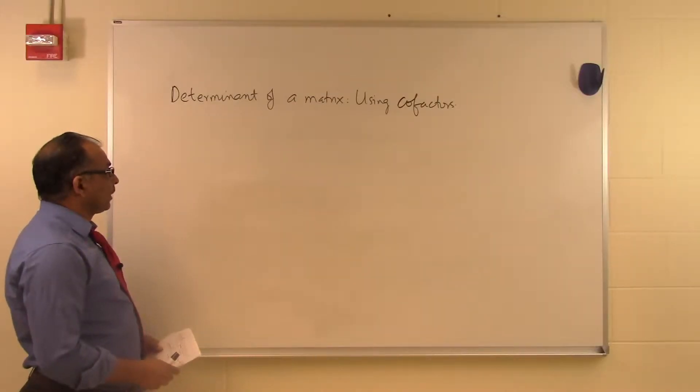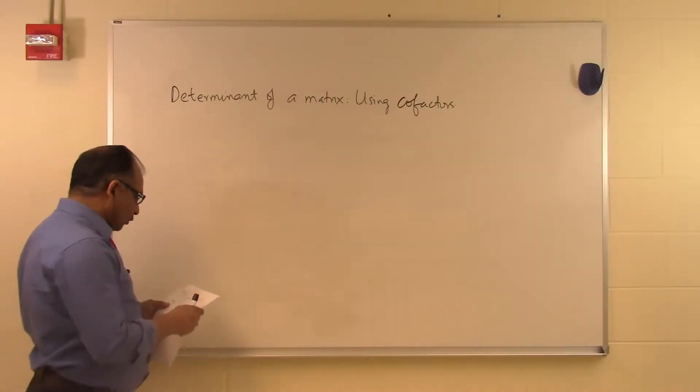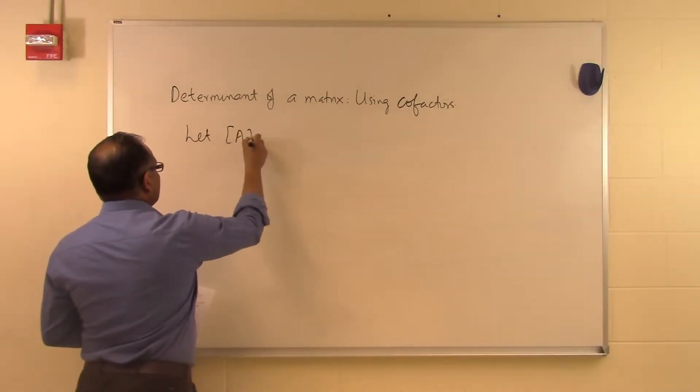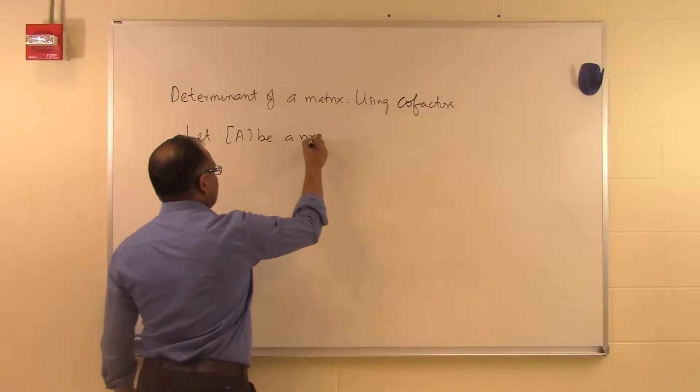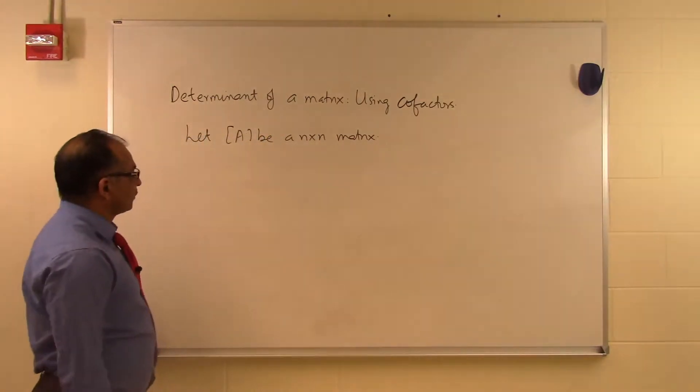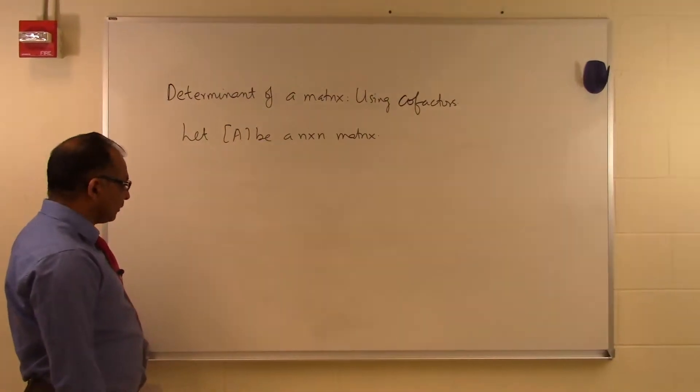In this segment we will talk about how to find the determinant of a matrix using cofactors. Let A be an n by n matrix. Because we can only find determinants of square matrices, it has to be an n by n matrix.